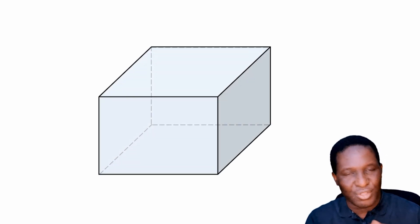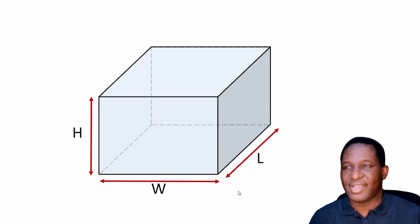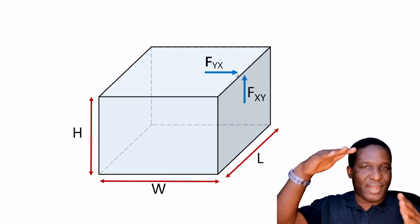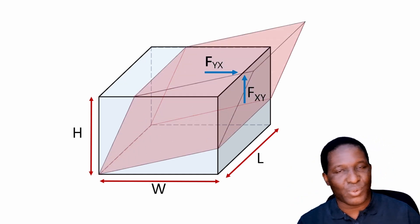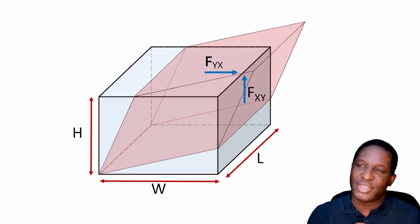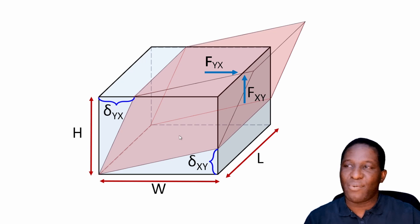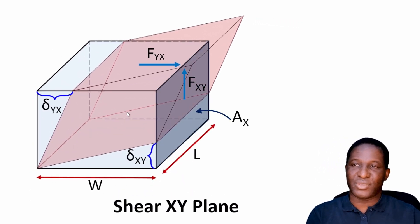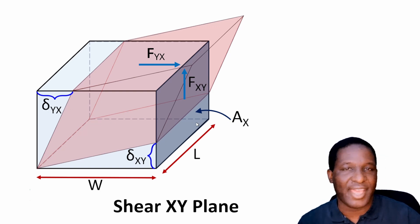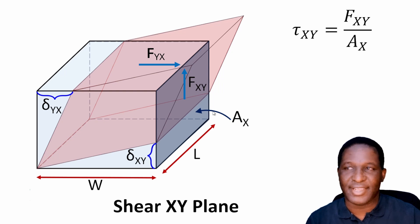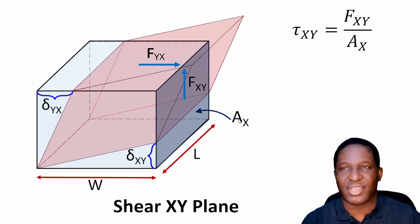This is a representation of the RVE, with length, width, and height noted. We are deforming it in the XY and YX plane. The deformation looks like the front plane moving by a distance delta_xy and the top plane moving by displacement delta_yx. The shear stress on the XY plane is the reaction force in the Y direction divided by the cross-sectional area on that plane. Similarly, the shear stress on the YX plane is the force on that face divided by its cross-sectional area.